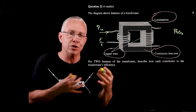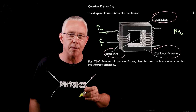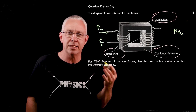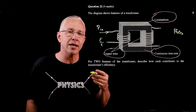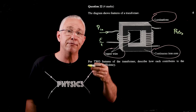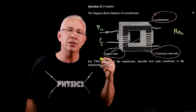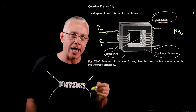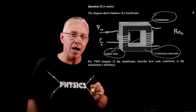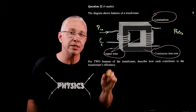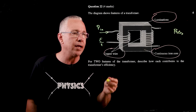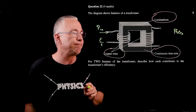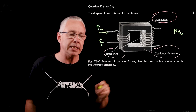First, copper wires have a lower resistance than other types of wire, so the current is higher and the wires don't heat up as much. Less resistance means less heat transformation in the wire, which increases the efficiency of the system.